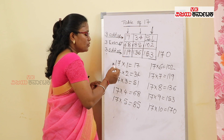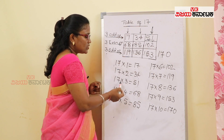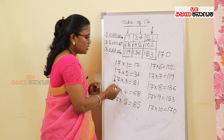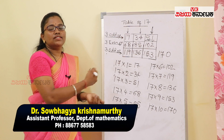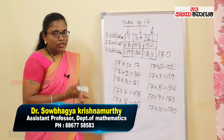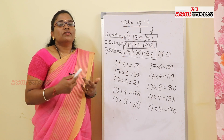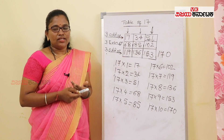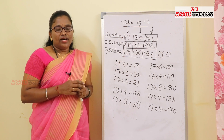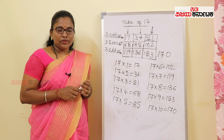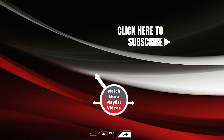1×7=7, 1×1=1, 2×7=14 — so carry 1, giving 2, 1, 1, plus 1 equals... 2×1=2, 2 plus 1 equals 3. Then 3×7=21, carry 2, giving 3×1=3, 3 plus 2 equals 5.